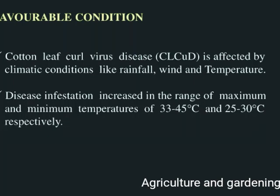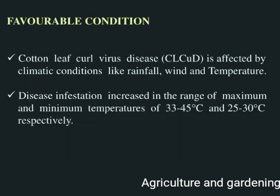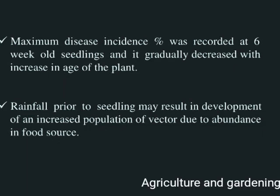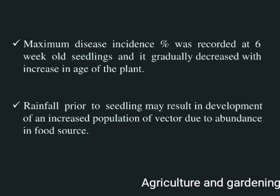The disease is affected by climatic conditions like rainfall, wind, and temperature. Disease infection increases within a range of maximum and minimum temperatures. Rainfall may result in the development and increased population of vectors due to an increase in the food source.